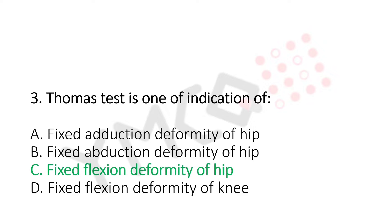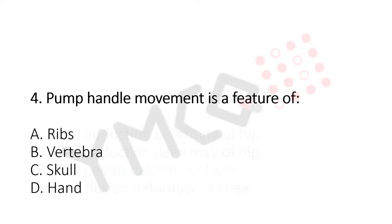Let's move to question number 4. Pump handle movement is a feature of: Option A, ribs. Option B, vertebra. Option C, skull. Option D, hand. And the answer is Option A, ribs.